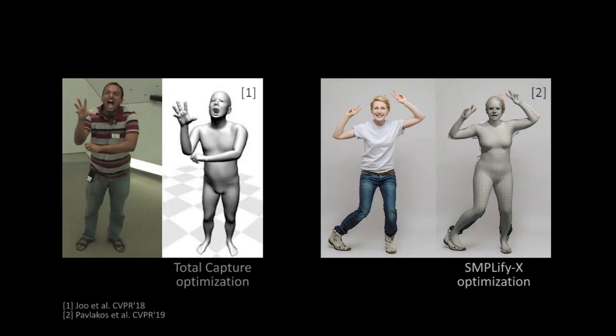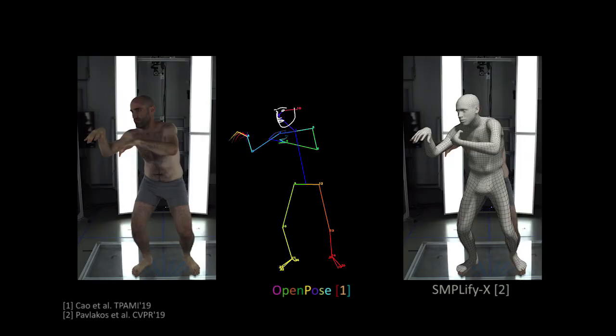Recent statistical 3D models such as SMPL-X, FLAME and MANO model the body, faces and hands together. SMPL-X and Monocular Total Capture fit these models to an RGB image. When they work well, they reconstruct 3D humans that are much more expressive than was previously possible. But for several reasons, these methods often struggle or even fail.